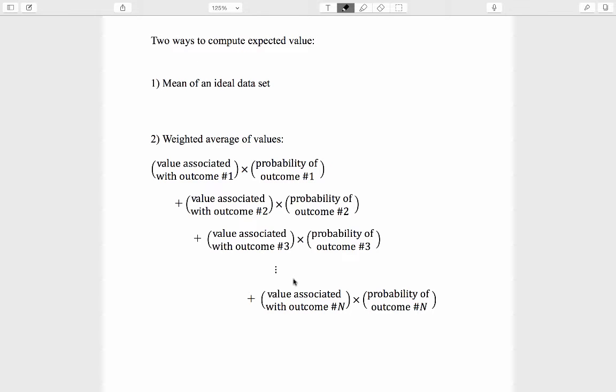So we have two ways to compute expected value. One as the mean of an ideal data set of values, and the other as a weighted average of values. This was the second definition: value times probability, plus value times probability. Relentlessly multiply value times probability and add them all up. You should be able to compute expected value by both methods.